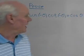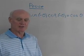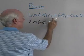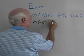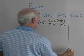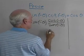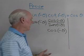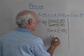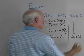Now let's prove the identity: sin(−θ) · cot(−θ) = cos θ. Starting with the left side — sin(−θ) times cotangent, which I'll write as cosine over sine: sin(−θ) · [cos(−θ) / sin(−θ)]. The sin(−θ) terms cancel, leaving cos(−θ). Since cosine is an even function, cos(−θ) = cos θ. So I've successfully transformed the left side into the right side, proving the identity.